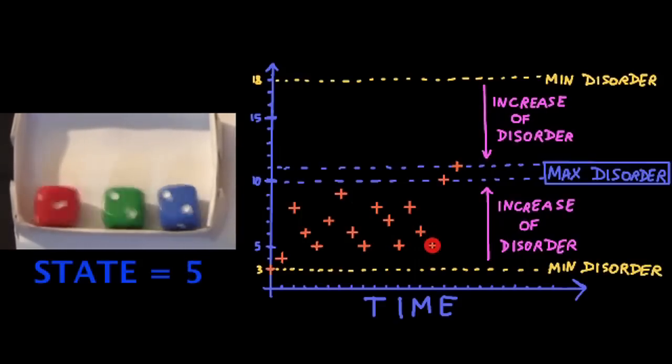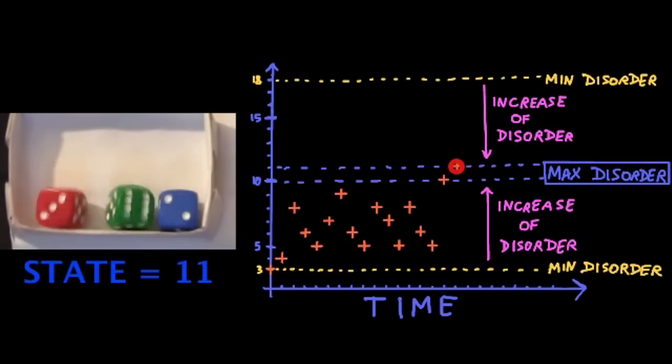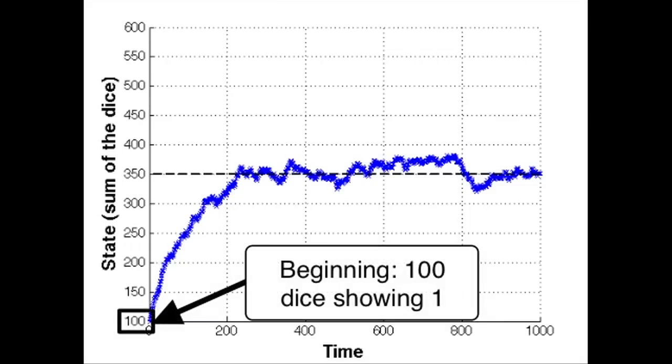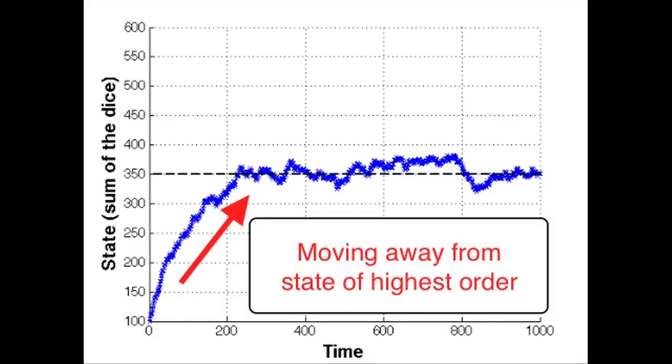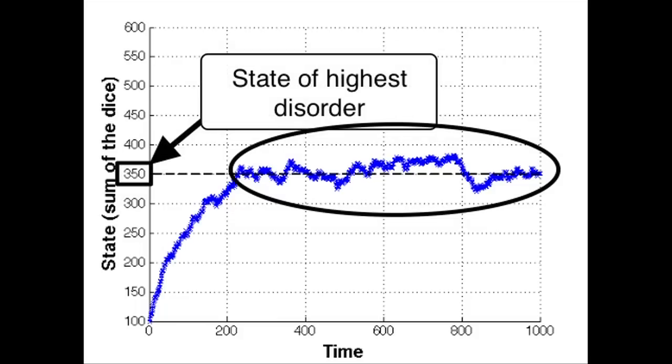Now if you imagine that we have 100 of these dice, starting from the situation where they all show 1, then this is how the state would evolve. The dice quickly move away from this very ordered state, and over time the system naturally evolves towards the state of highest disorder.